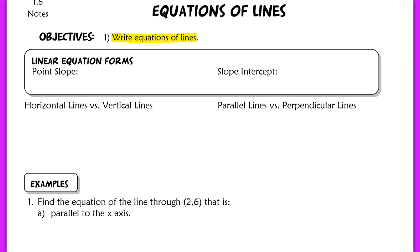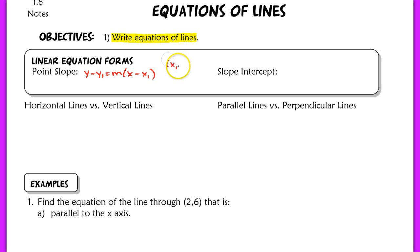Let's start off with our two basic forms for linear equations. We've got point-slope form: y minus y1, which is equal to m times x minus x1. x1 and y1 represent any point on the line, and m is the slope of that line.